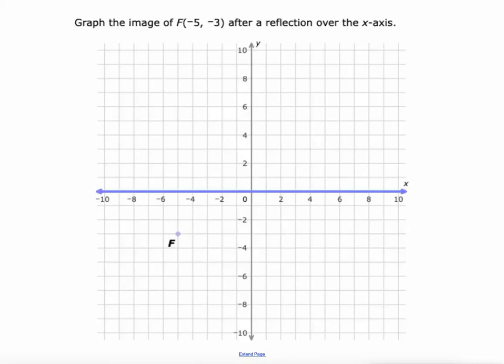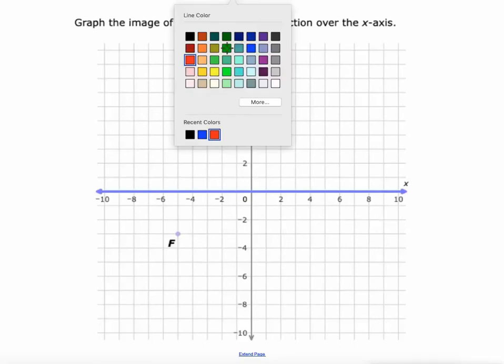So here we're told to graph the image of point f, which is at negative 5, negative 3, after a reflection over the x-axis. The x-axis is clearly labeled for us. If we want to reflect over that line, I'll do it in green.